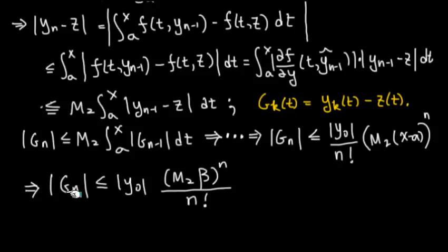Now, what we want to show is that this right-hand side, the upper bound of gn, approaches 0. So m2 is fixed and beta is fixed. Up there is nth power, down there is nth factorial, and y0 is fixed. This is the standard result in calc 2.